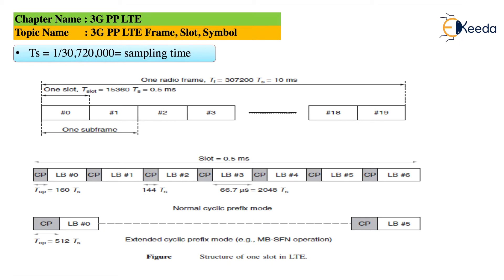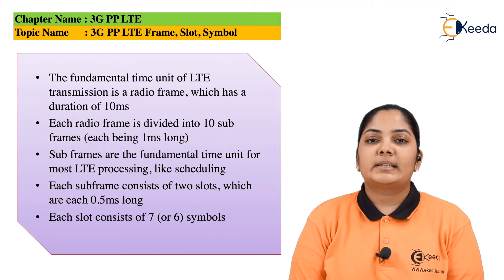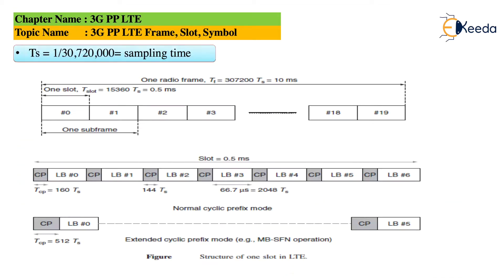So here, slot 0 is 0.5 milliseconds and slot 1 is also 0.5 milliseconds. One subframe together forms 1 millisecond. Each slot consists of 7 or 6 symbols. Below we can see there is a CP which is in the grey color, that is called a cyclic prefix, and every data has a cyclic prefix attached to it.